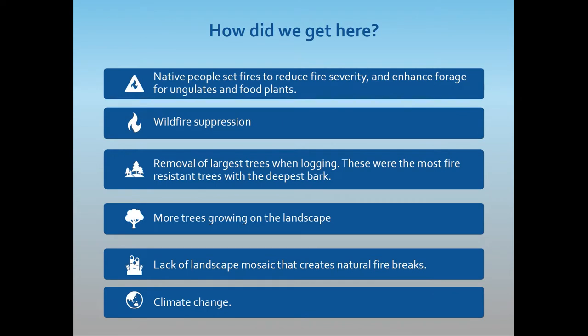How did we get here? In the US it likely begins with European colonization, which impeded Native peoples from setting the fires they had for generations — fires that reduced fire severity and enhanced food plants as well as forage for native deer, elk, and bison that they depended on. The policy of wildfire suppression that followed has allowed fuels to accumulate in places that historically burned more frequently.